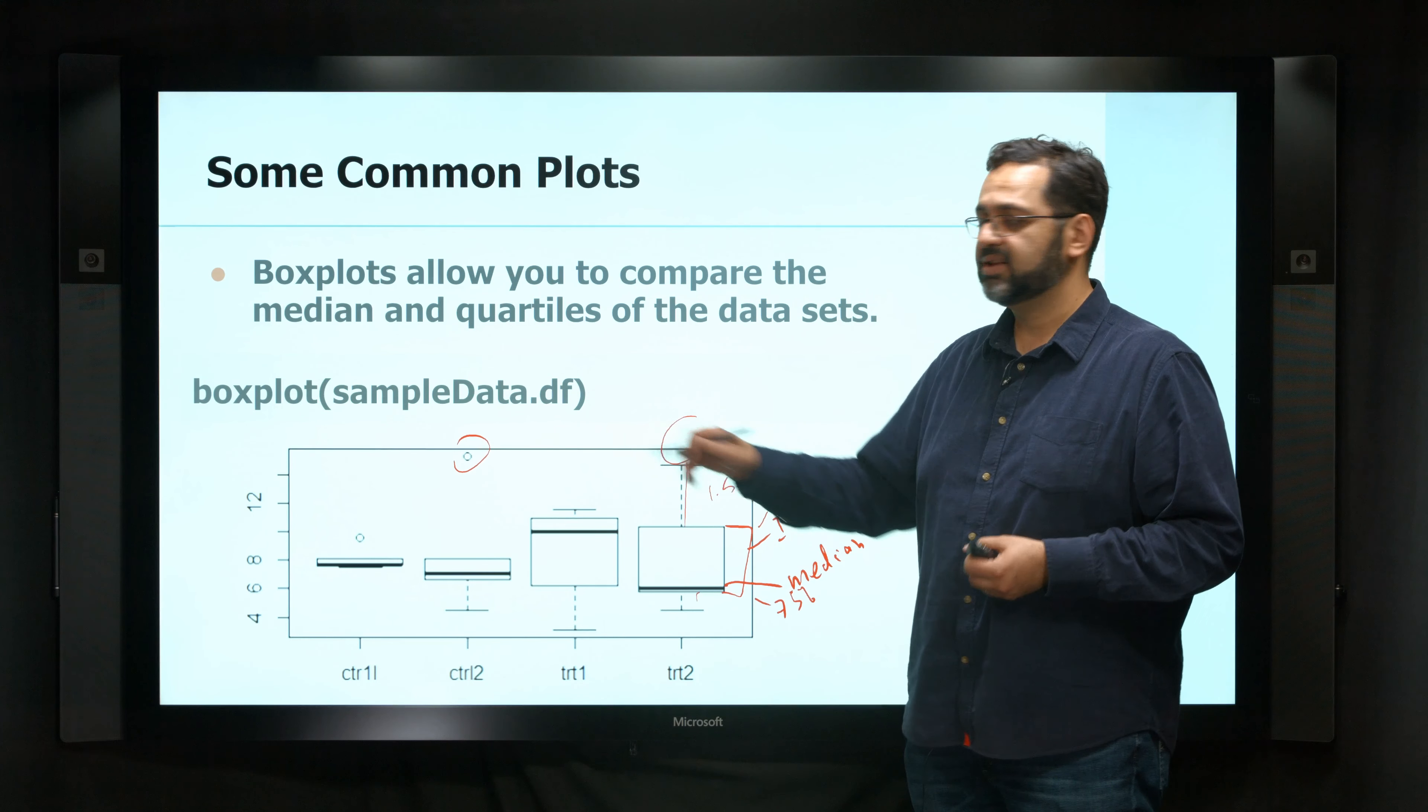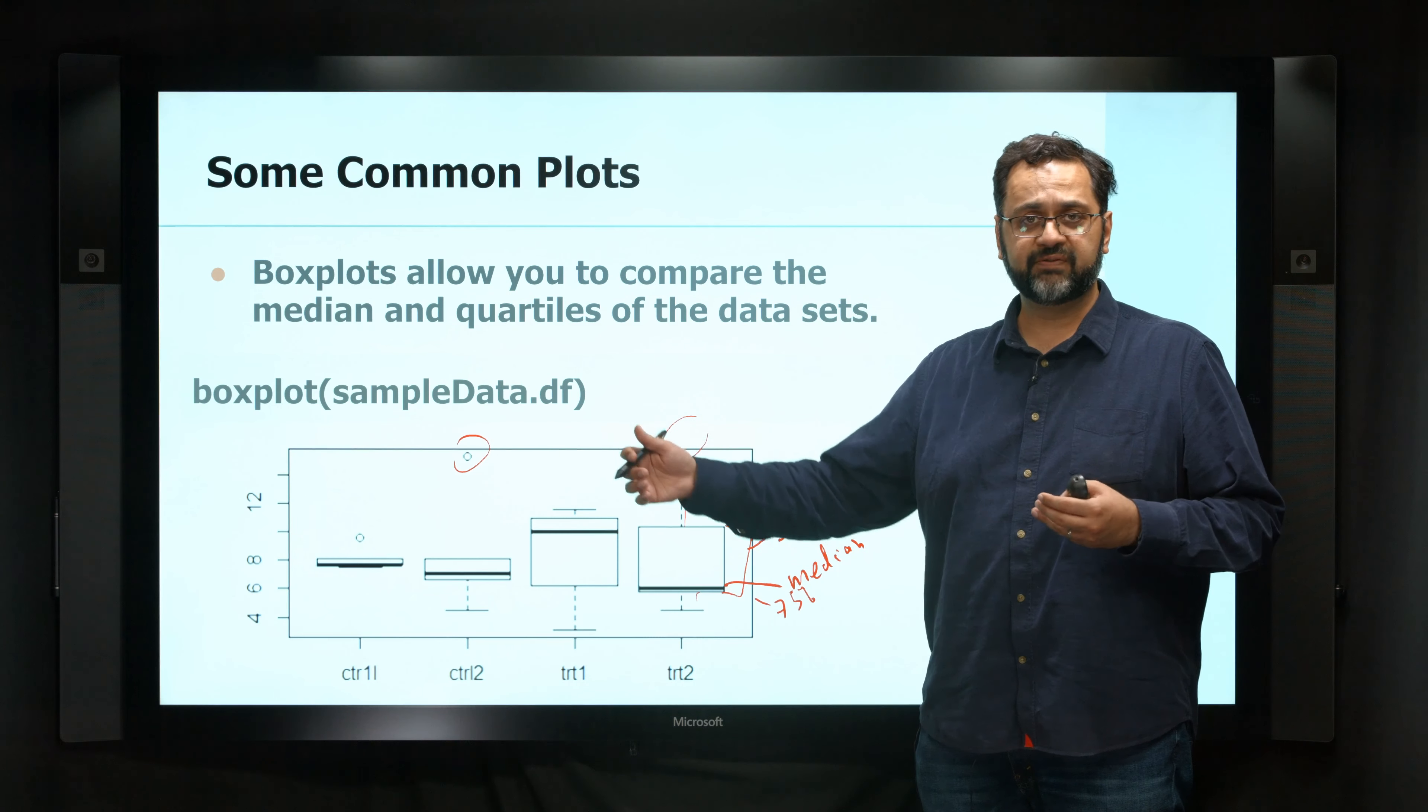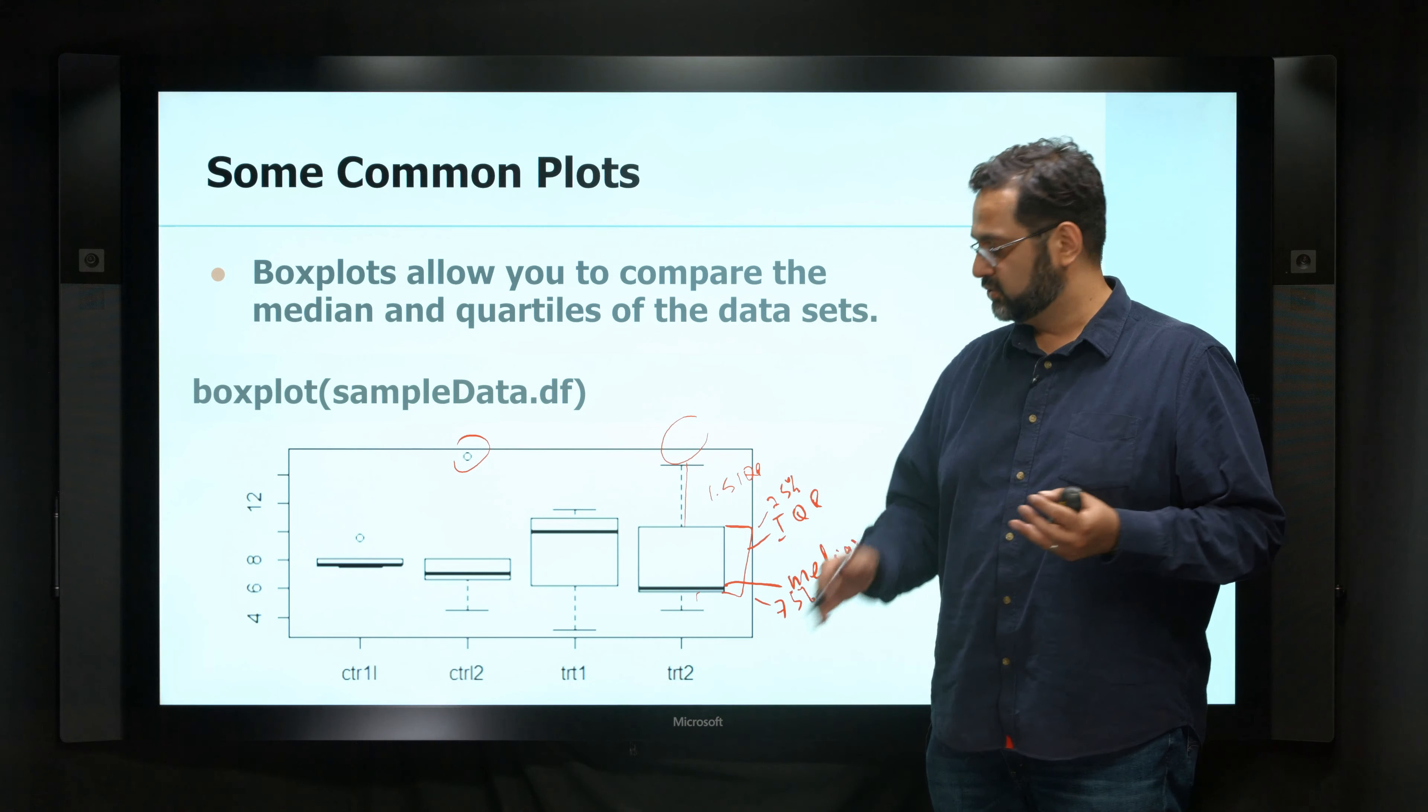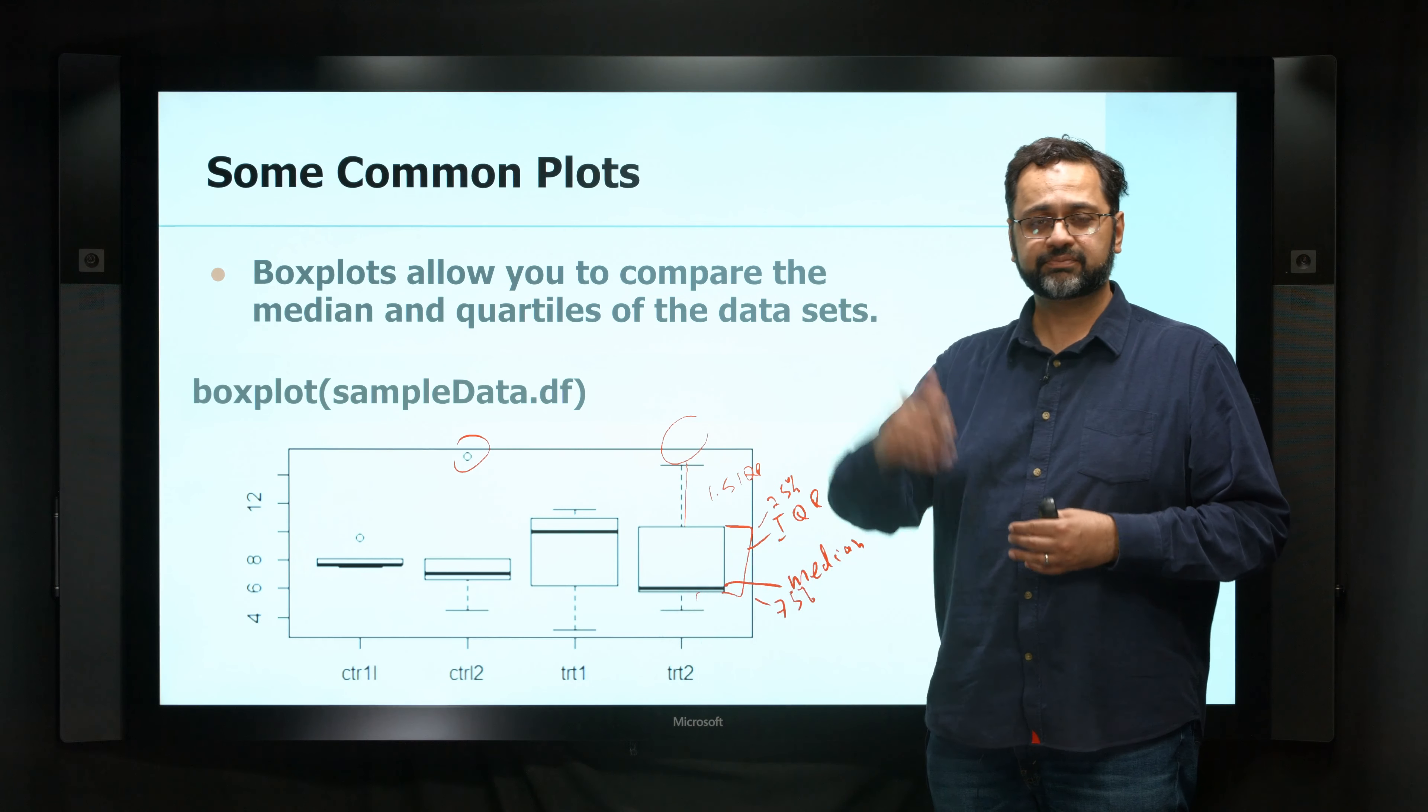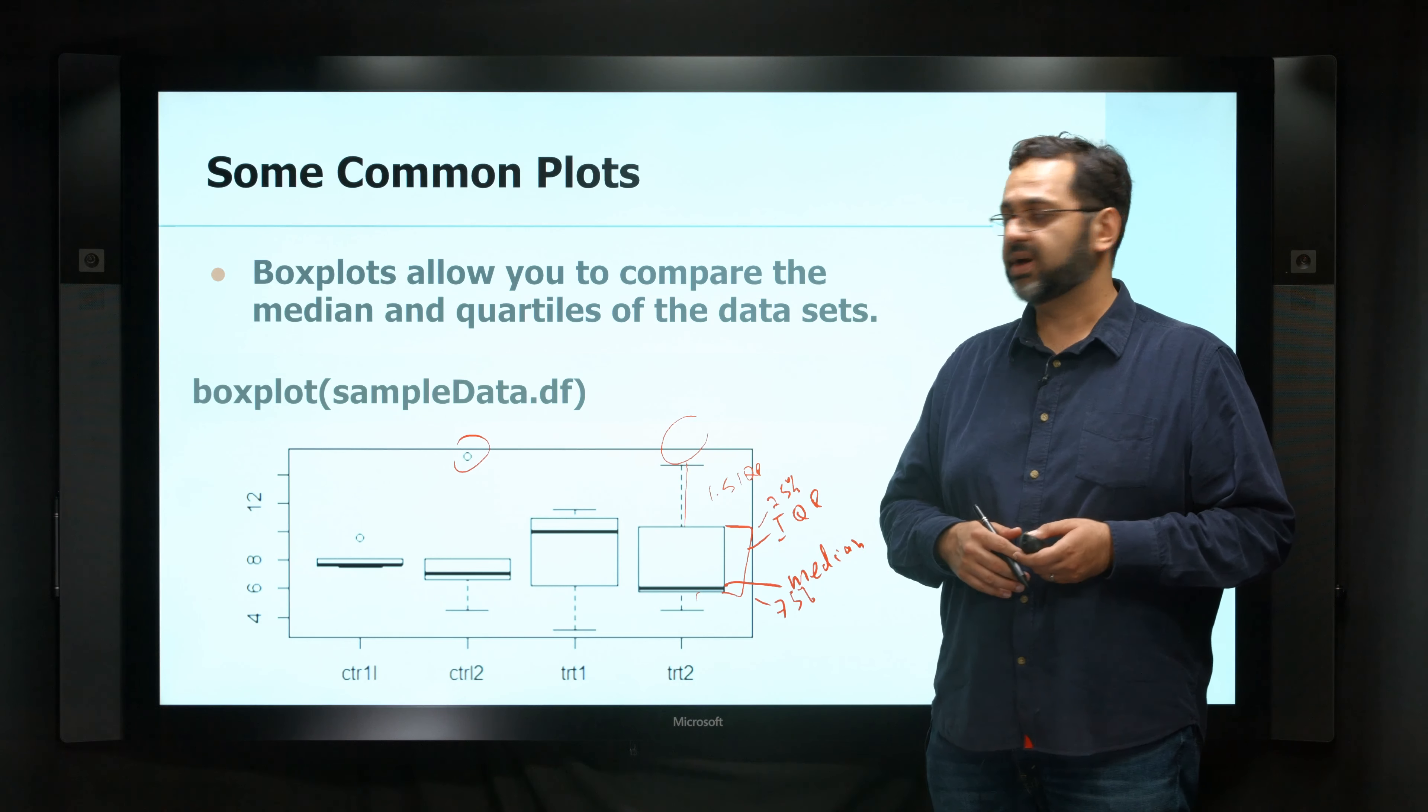We can also create box plots by giving it a set of values and grouping them using a factor, and that also will group them into different bins and show the distribution of the data. We'll see that later on when we look at gene expression patterns.